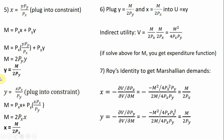Next, taking those X and Y results, we plug them into the utility function to get the indirect utility function — I'll call it V — which is utility expressed as a function of prices and income. As mentioned, if you solve this indirect utility function for M (income), you obtain the expenditure function. We'll come back to that a little later.